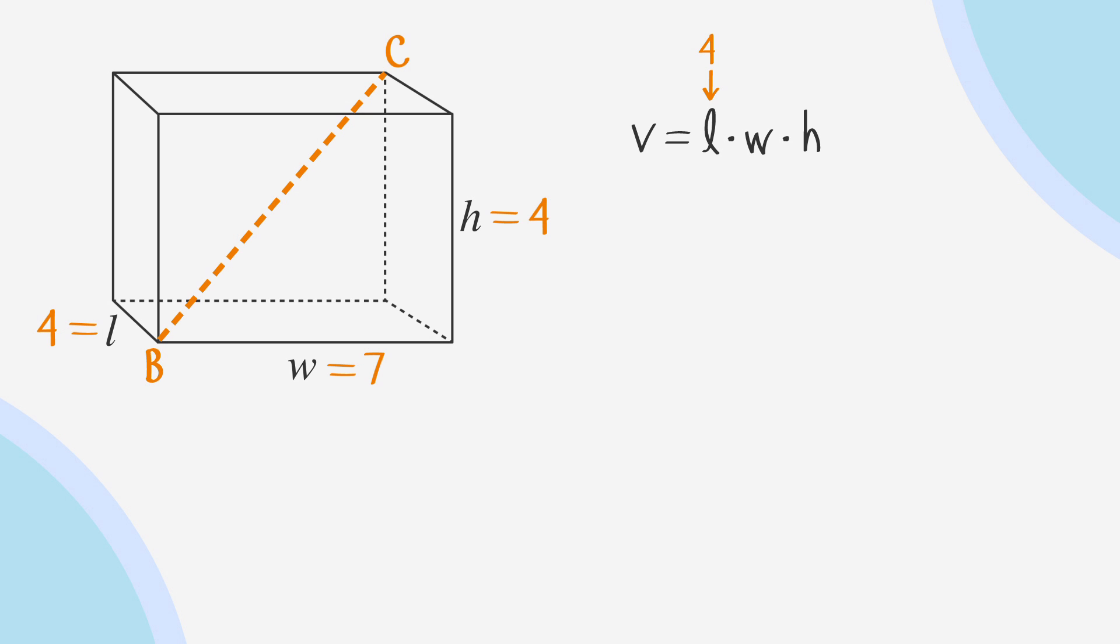Substituting 4 for length, 7 for width, and 4 for height, we get 4 times 7 times 4 equals 112.